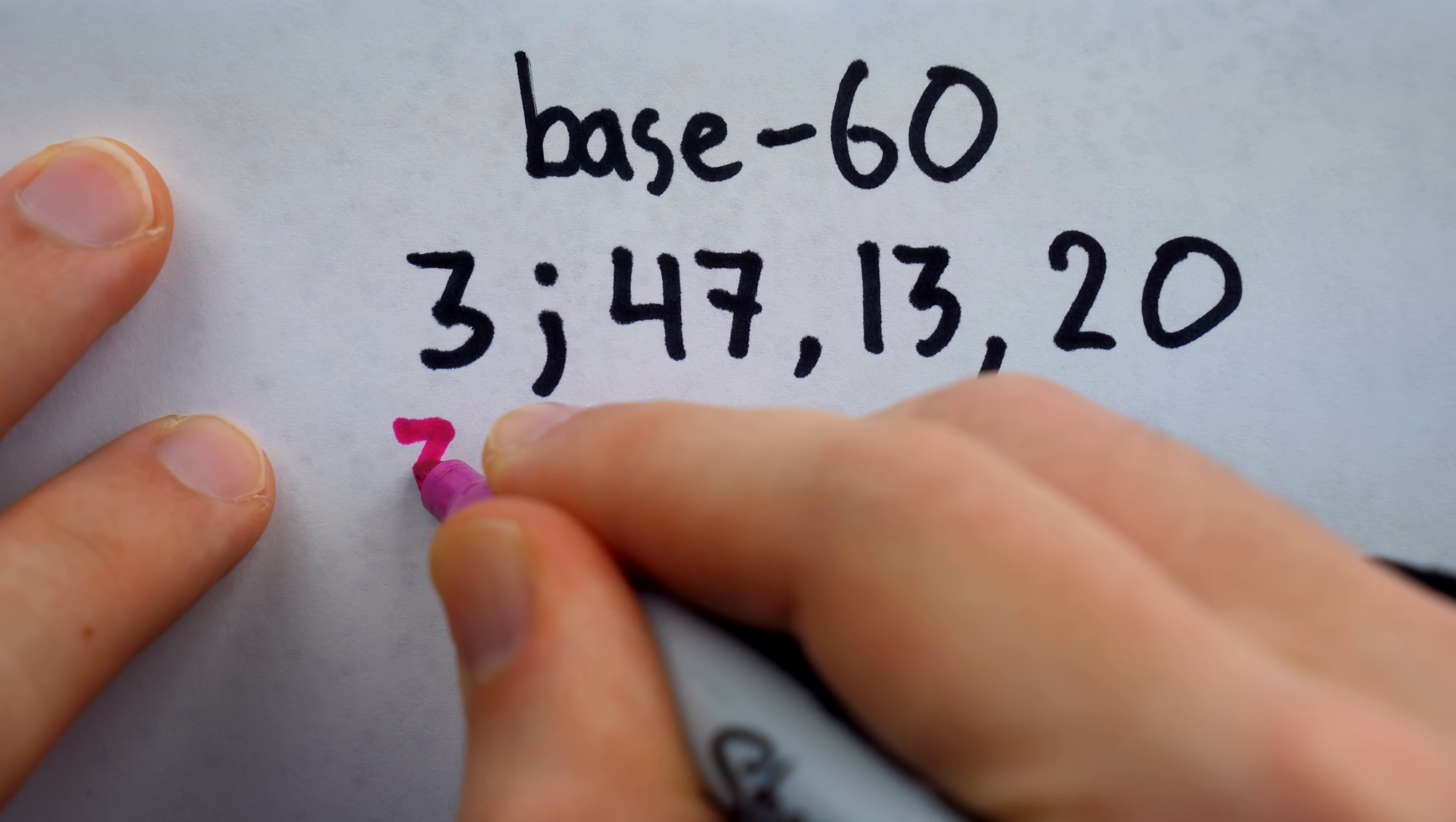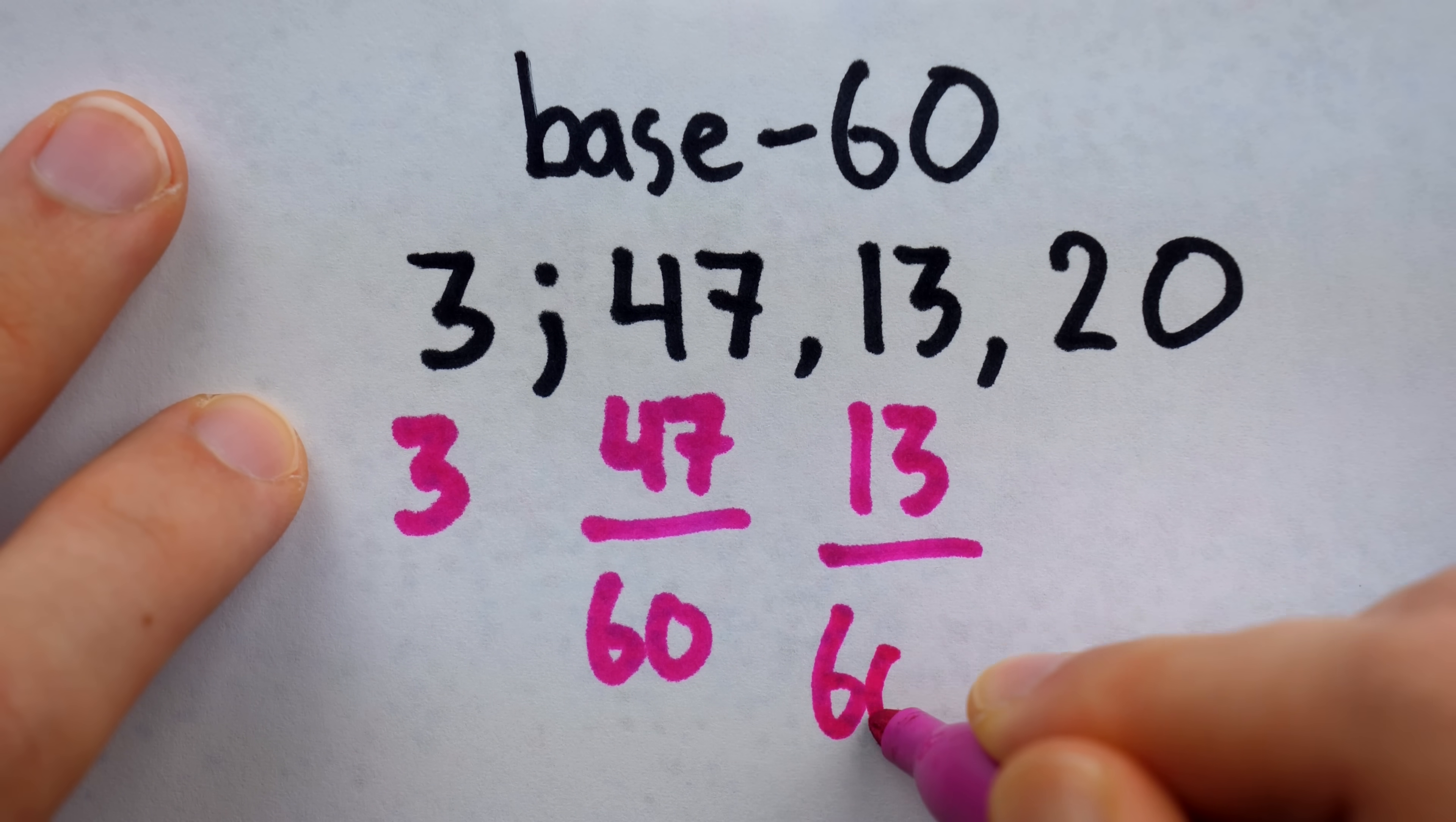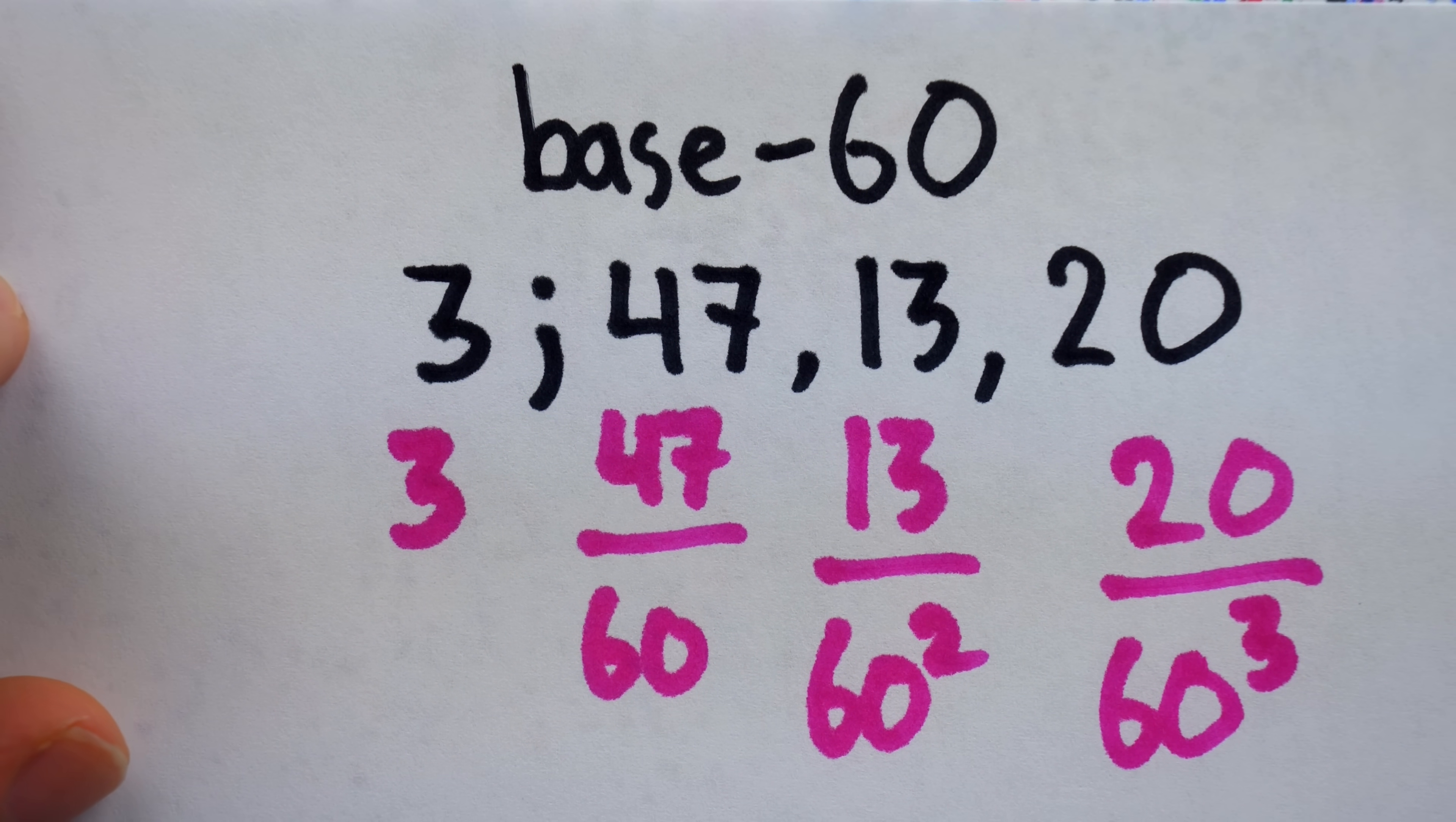Where the 3 represents 3 wholes, the 47 represents 47 over 60, the 13 represents 13 over 60 squared, and the 20 represents 20 over 60 cubed. If you add these up on a calculator, you'll see it comes out to 3.7870.